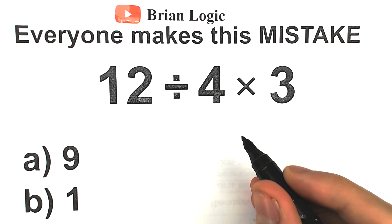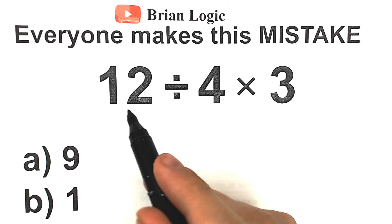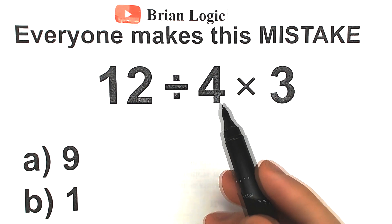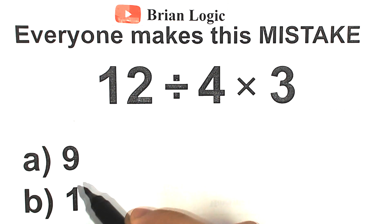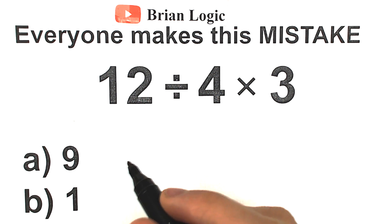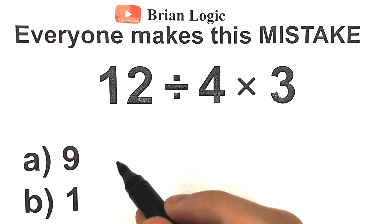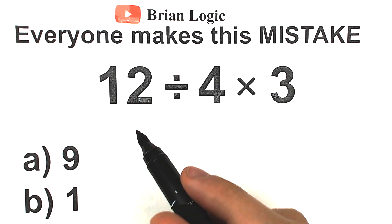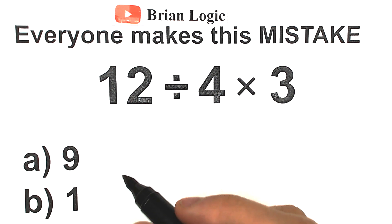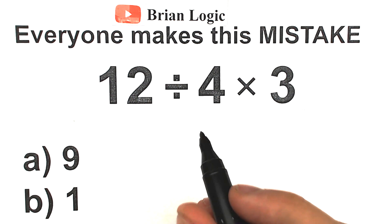Hello everyone and welcome back to my channel BrainLogic. People all over the world are arguing about the correct answer to this challenge. We have 12 divided by 4 times 3, and one part of people say the correct answer is 9, while another part says the correct answer is 1. In this video I'm going to fully explain what is the correct approach and how to solve it step by step. Before we begin, I suggest you pause the video and try to solve it yourself — write your thoughts in the comment section.